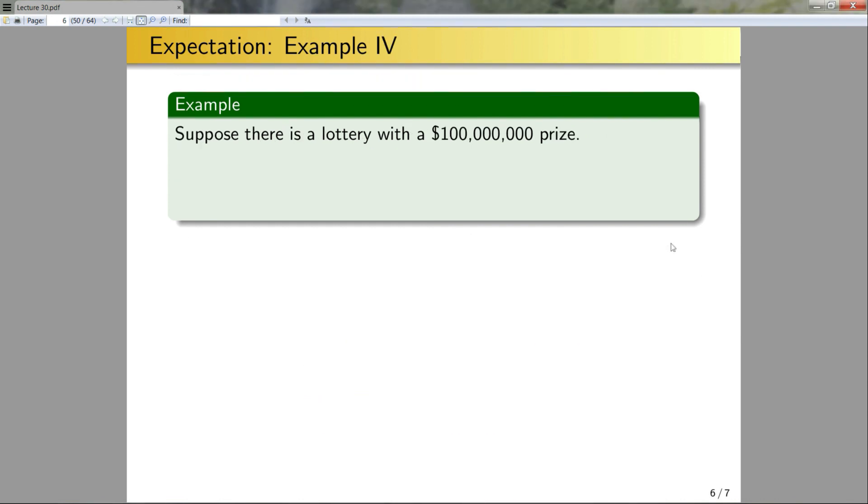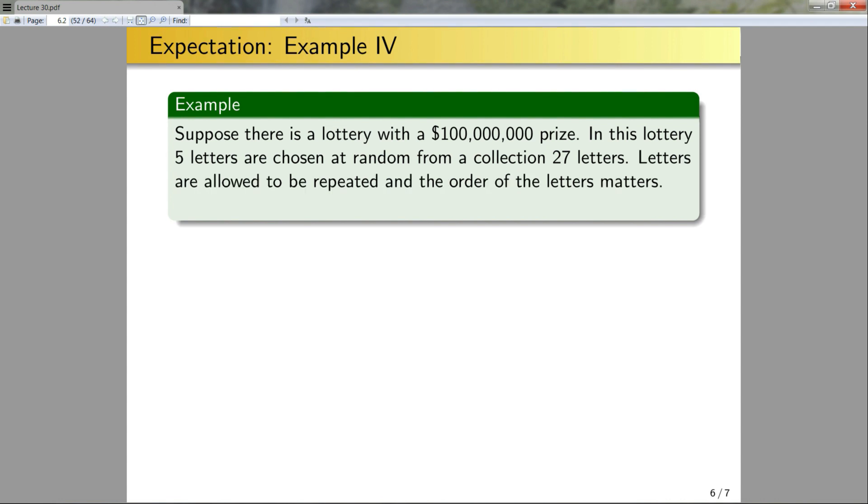Okay, so we have one more example, and we are done for these slides. It's kind of a short lecture. Suppose there's a lottery with a $100 million prize. In this lottery, five letters are chosen at random from a collection of 27 letters. Letters are allowed to be repeated, and the order of letters matters. So if I get AABBA, that's different than if I were to get BBAAA, just as an example. Each ticket costs $5. Should I buy some tickets?